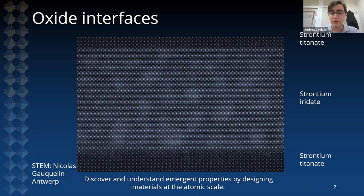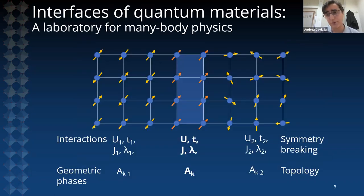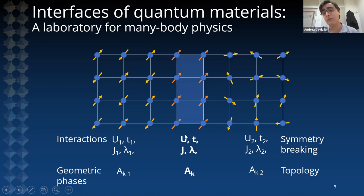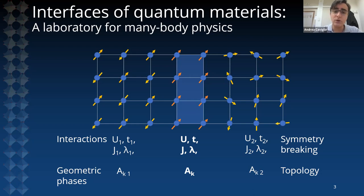What I find particularly fascinating about these systems is that every single atomic layer that you see represented has been deliberately placed here experimentally. This allows us to build complex matter atomic layer by atomic layer, and to design material properties. Our aim is to discover and understand their emergent properties. When we create an interface between material A and material B, we usually induce some sort of reconstruction — structural or electronic — in which atoms or charges are being moved around.